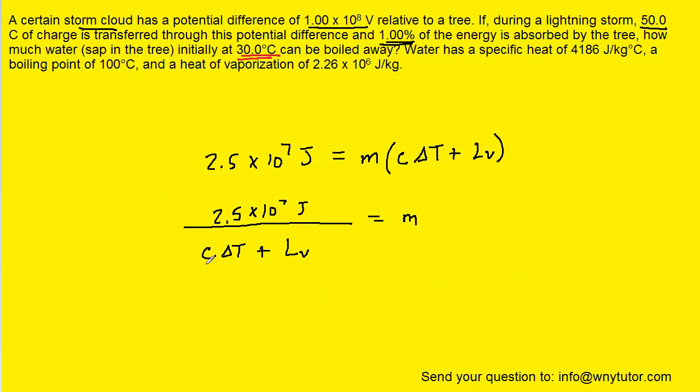Now luckily, the specific heat, which is represented by the letter c, the change in temperature, and the latent heat of vaporization are given to us in the standard units. Let's just not forget that with change in temperature, we have to do the final temperature of 100 degrees Celsius minus the initial temperature of 30 degrees Celsius. So with that idea in mind, we'll go ahead and plug in these known values in the denominator.